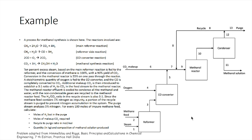The hydrogen-to-carbon dioxide ratio in the recycle stream is also 3-to-1. Since the methane feed contains 1 percent nitrogen as impurity, a portion of the recycle stream is purged to prevent nitrogen accumulation. The purge stream contains 5 percent nitrogen. For every 100 moles of impure methane feed, calculate: moles of hydrogen lost in the purge, moles of makeup CO2 required, recycle-to-purge ratio in moles per mole, and the quantity and composition of methanol solution produced.